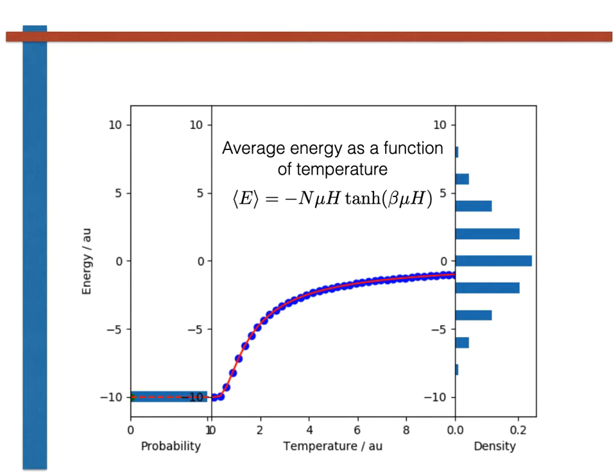The panel on the right then shows the density of states. This density of states tells us the fraction of microstates with each of the possible values of the energy. As you can see, for the two-level systems, we have a binomial distribution for the density of states, which is peaked at a value of E of zero.